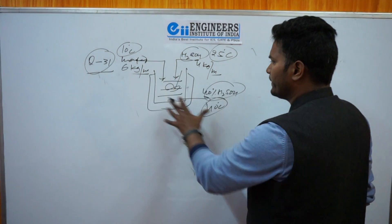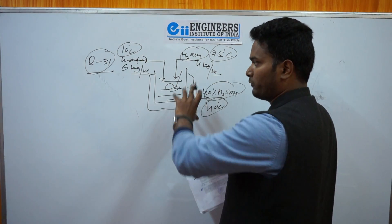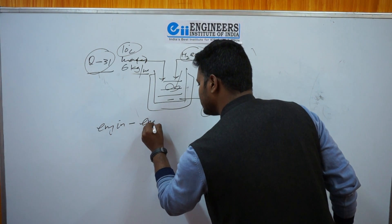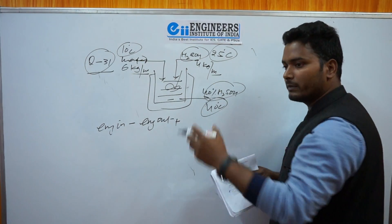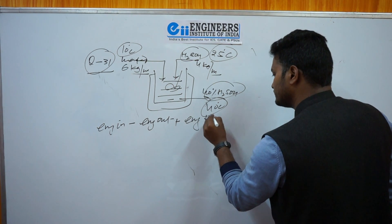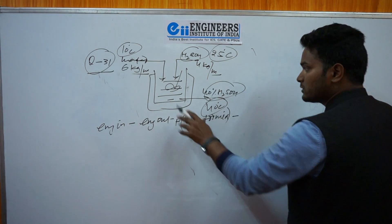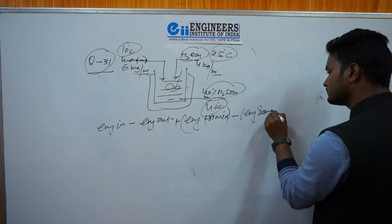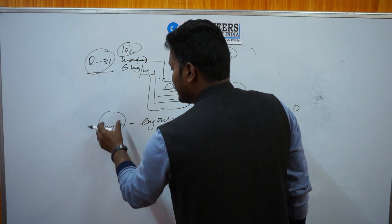Applying the simple steady-state energy balance, since the process is at steady state: Energy_in − Energy_out + Energy_generated (due to mixing) − Energy_removed = 0. There is no accumulation because the process is at steady state. The reference temperature given is 25°C.